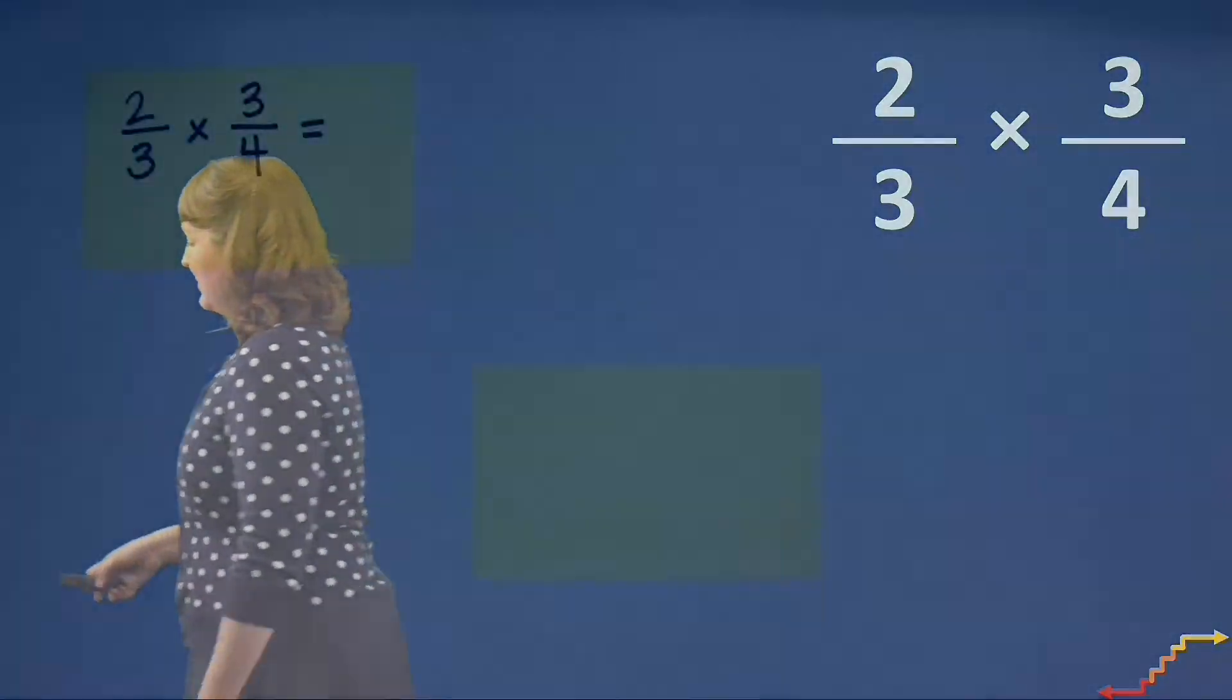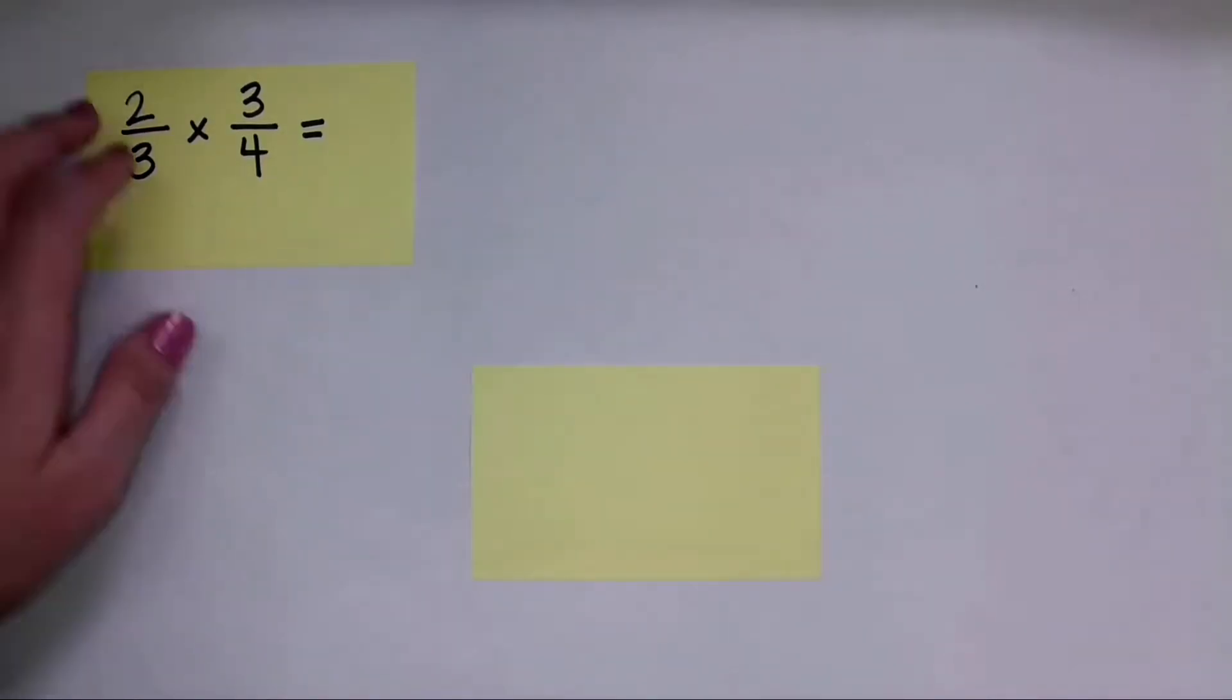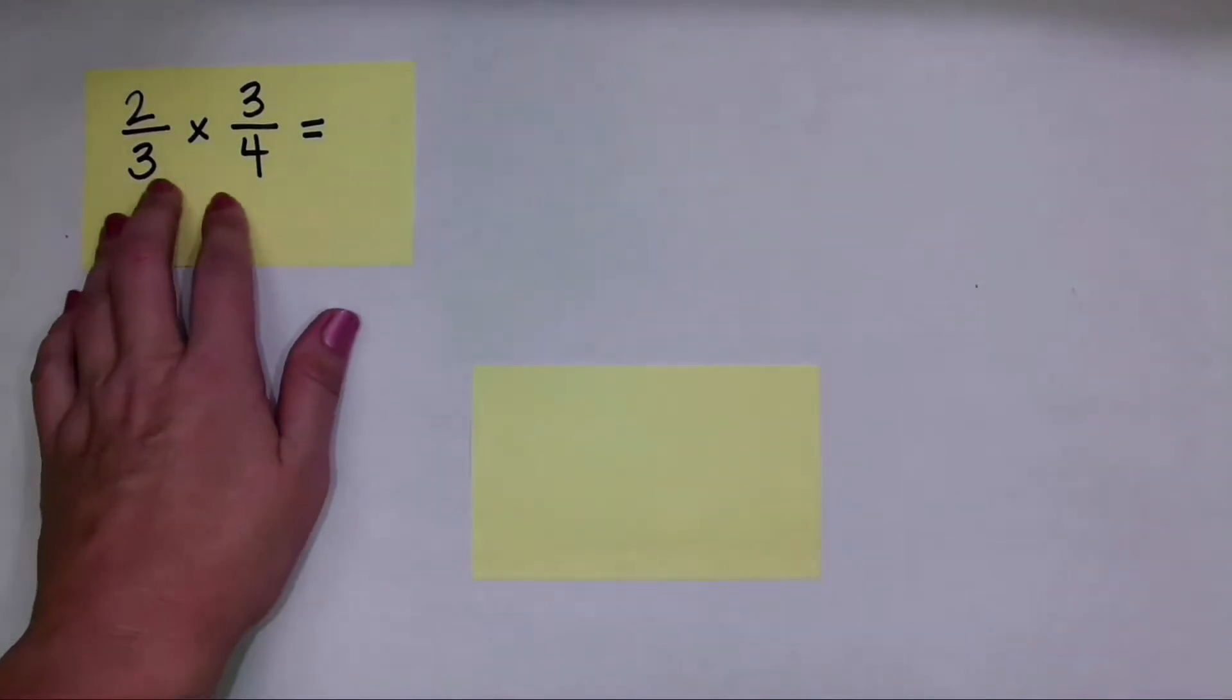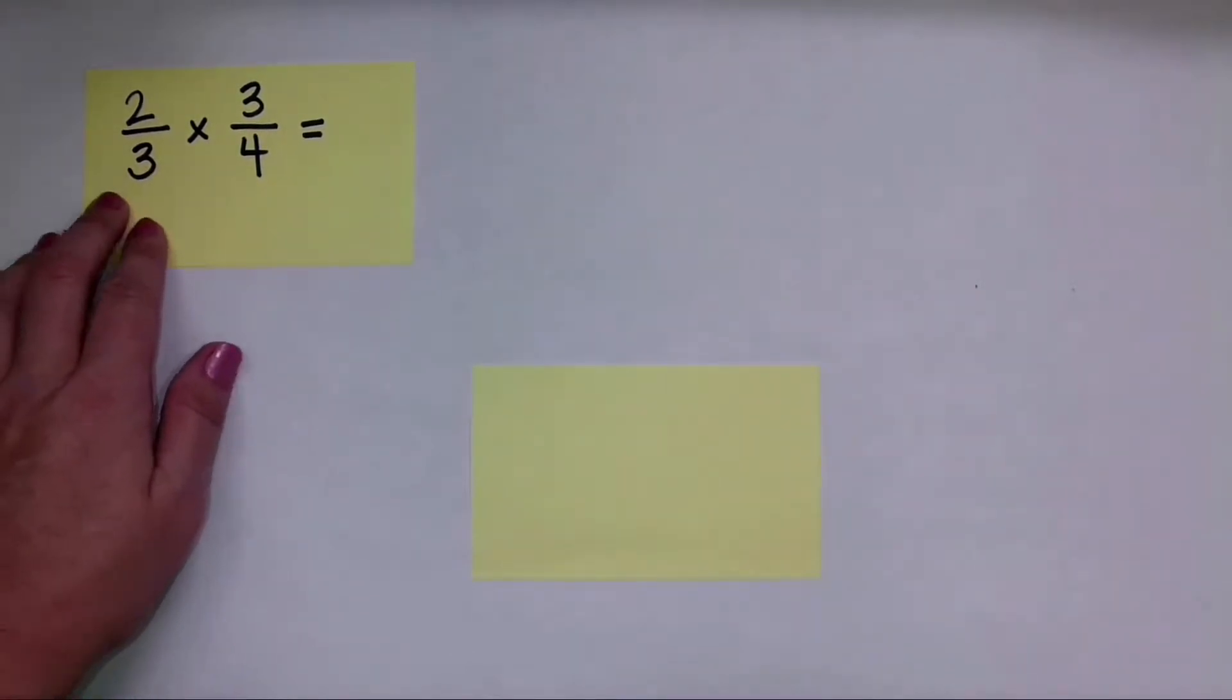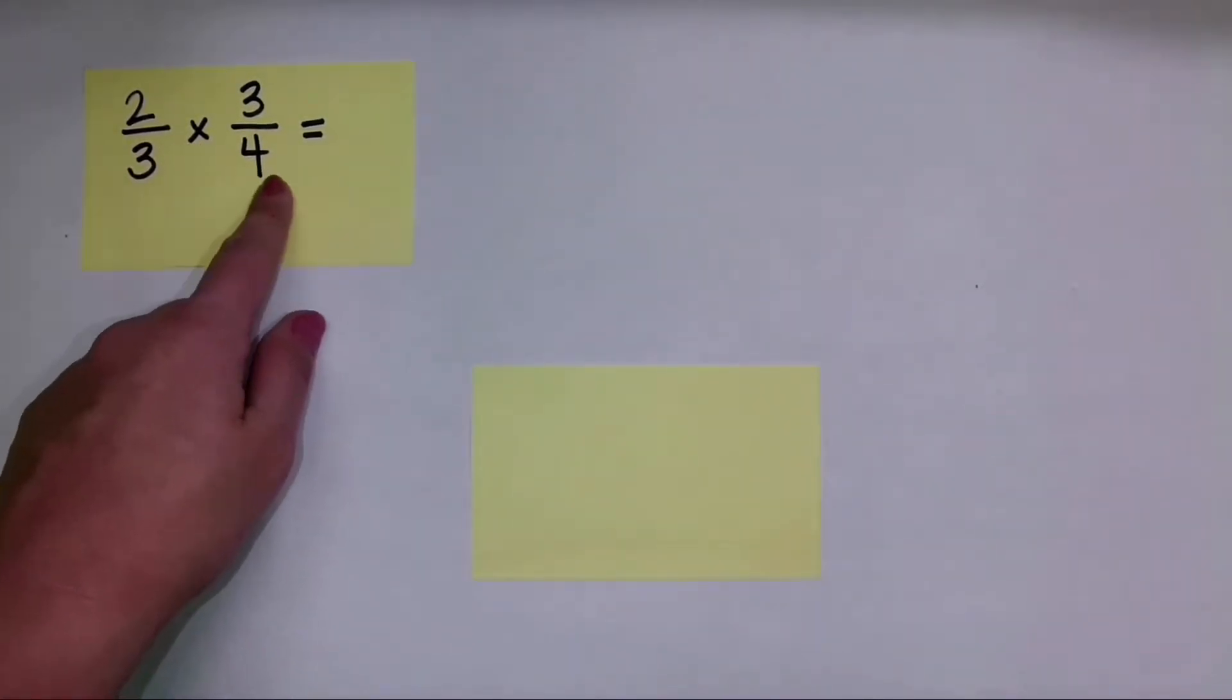So I'm going to go over and use my manipulatives. And right now we're using the length model of fractions. So here I have my problem written out, 2 thirds times 3 fourths or 2 thirds of 3 fourths.